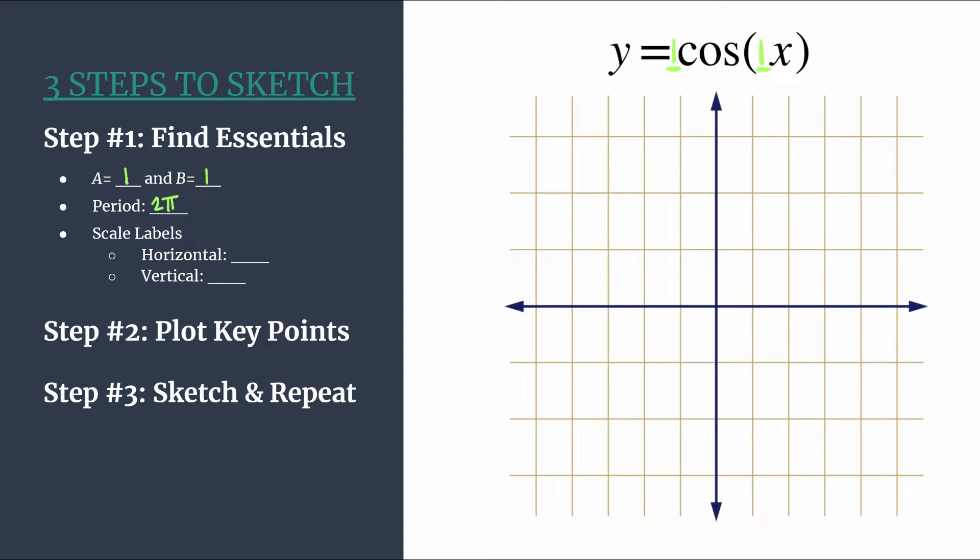The final essential information you want to find will be the scale labels. And you'll do this horizontally and vertically. Horizontally, we'll take the period and we'll divide it by four because we know we're going to have four key points in our pattern. And so if we divide our period by four, the horizontal length of a cycle, we'll make sure each of these points lines up nicely with one of our horizontal tick marks. So in this case, we have two pi, we divide it by four, and you see that simplifies to pi over two.